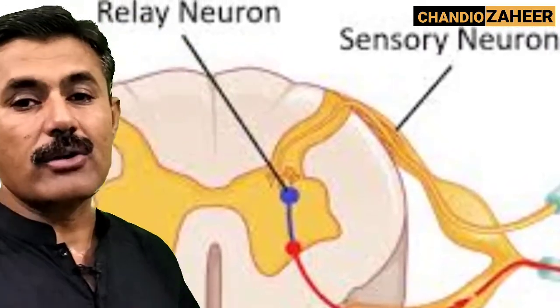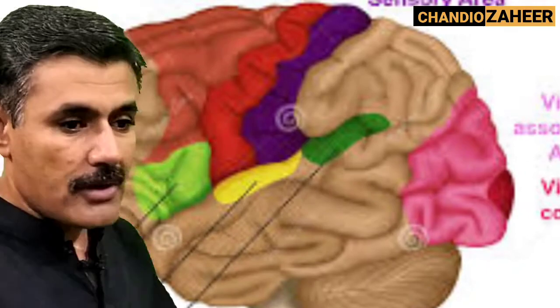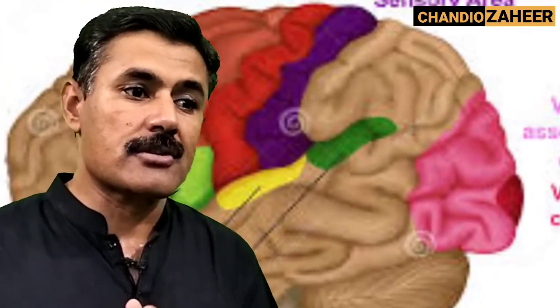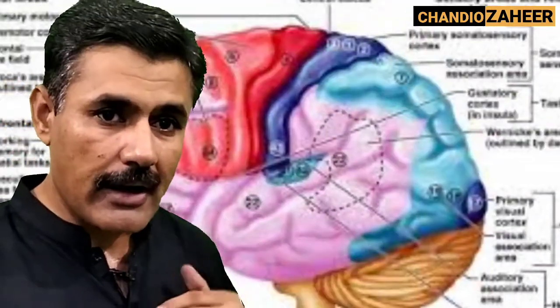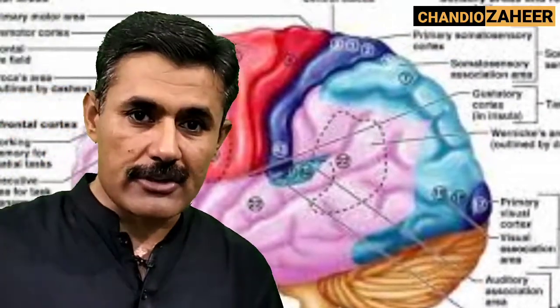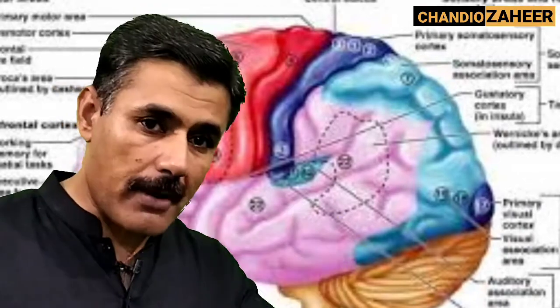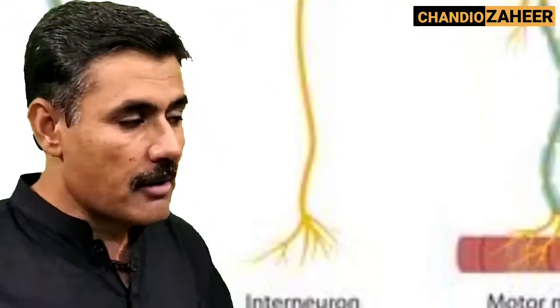Inter-neurons are not only short axon neurons — they can be long axon as well. When they are long axon, they play an important role in conducting impulses from one part of the brain to another part of the brain. They relay information from one region to another, and for that they need long axons. So inter-neurons can also be long axon inter-neurons.